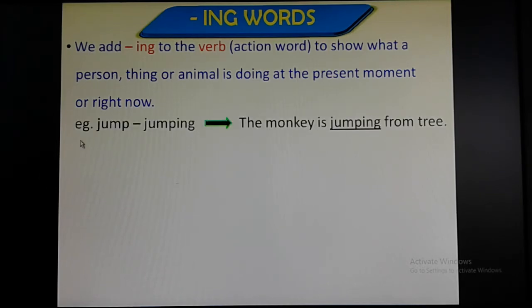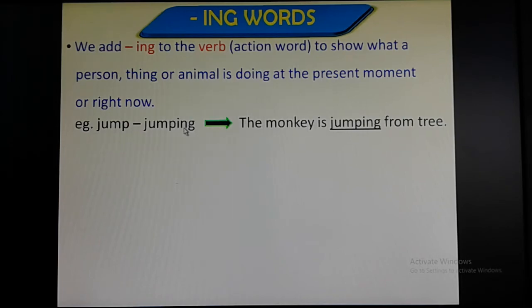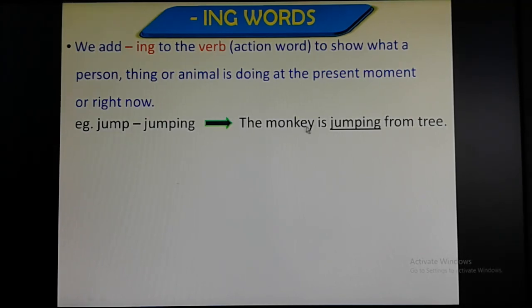Let us see the examples. Example: jump → jumping. The original verb is jump. In this original verb jump, we have added ing. So the new word became jumping. How you can use this in a sentence? See here: The monkey is jumping from the tree. The meaning of this is the monkey is jumping from the tree right now. It has not jumped yesterday nor it is going to jump tomorrow, but the sentence means the monkey is jumping from the tree right now at the present moment.